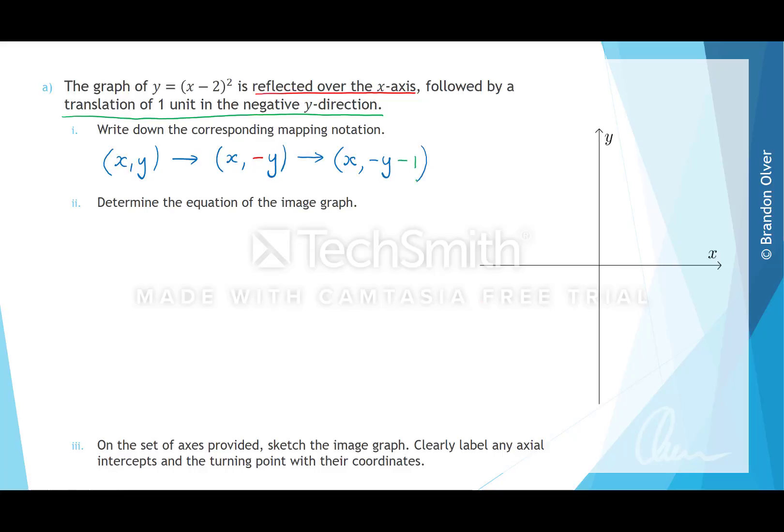So that's the corresponding mapping notation for a reflection over the x-axis followed by a translation of one unit in the negative y direction. For part 2, we want to determine the equation of the image graph, and to do that we generate two equations from our mapping notation.